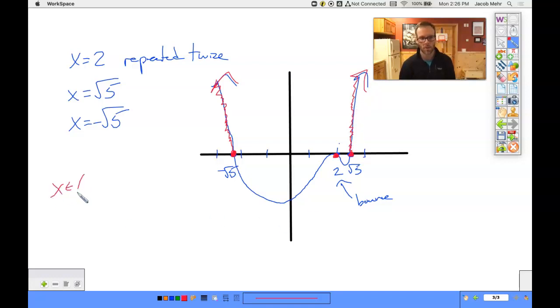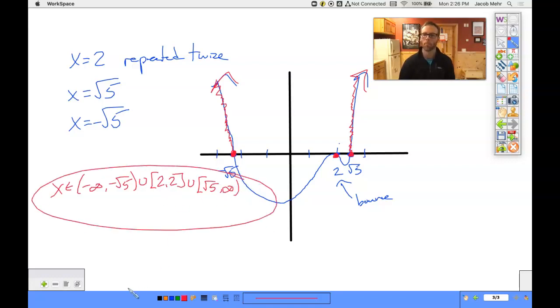So my solution is negative infinity to negative root 5 union 2 to 2 union square root of 5 to infinity. There we go.